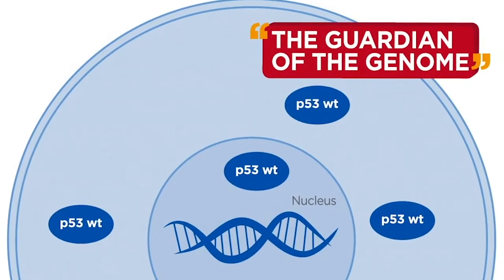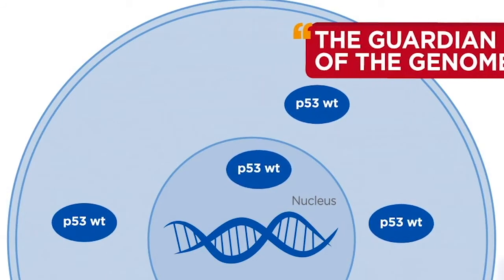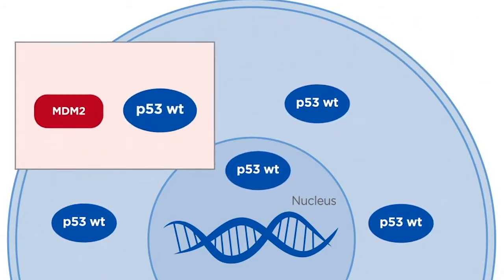Known as the guardian of the genome, the tumor suppressor protein p53 prevents faulty cells from multiplying.